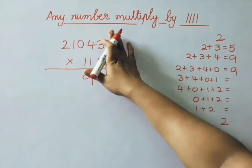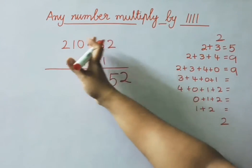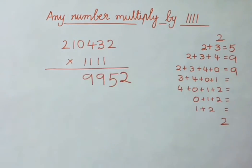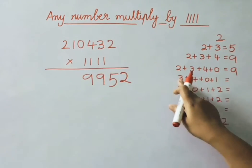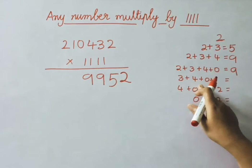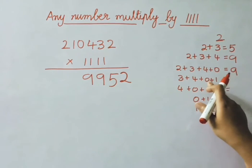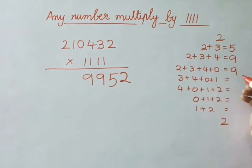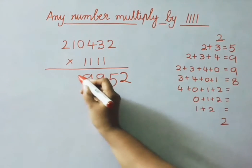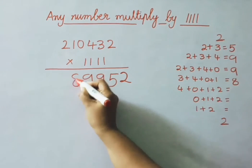Next, leave this first digit. Again 4 digits we have to add: 3 plus 4 is 7, 7 plus 0 is 7, 7 plus 1 is 8. So write down the answer as 8.